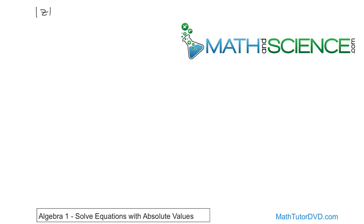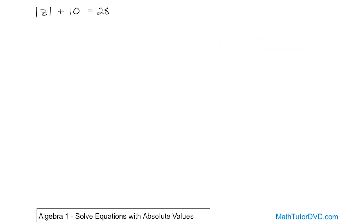What if you have an equation like absolute value of z plus 10 is equal to 28? You want to get z by himself — that's what you really want to do to solve for z. But you have this plus 10 here, so we're going to subtract 10 from both sides. The plus 10 minus 10 go away, and then we have 28 minus 10 on the right. So you have absolute value of z is equal to 18.